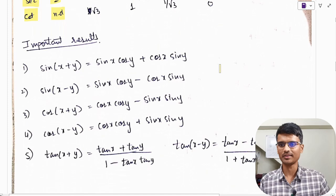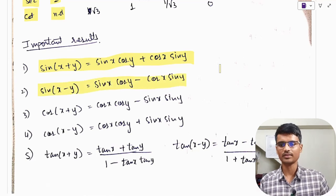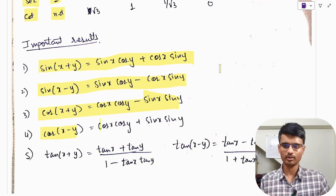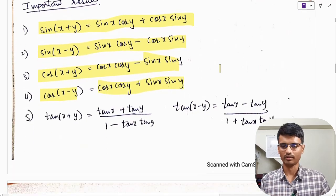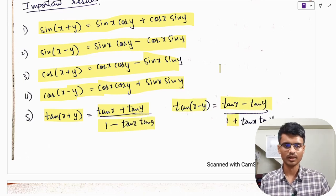Moving on to some important results. Sin(x + y) = sin x cos y + cos x sin y. Sin(x − y) = sin x cos y − cos x sin y. Cos(x + y) = cos x cos y − sin x sin y. Cos(x − y) = cos x cos y + sin x sin y. Tan(x + y) = (tan x + tan y) / (1 − tan x tan y). Tan(x − y) = (tan x − tan y) / (1 + tan x tan y).